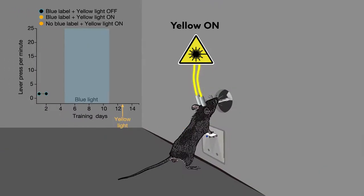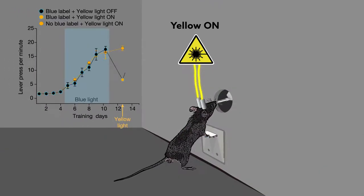When the scientists shined yellow light on mice that already knew how to quench their thirst, the mice no longer pressed the lever.